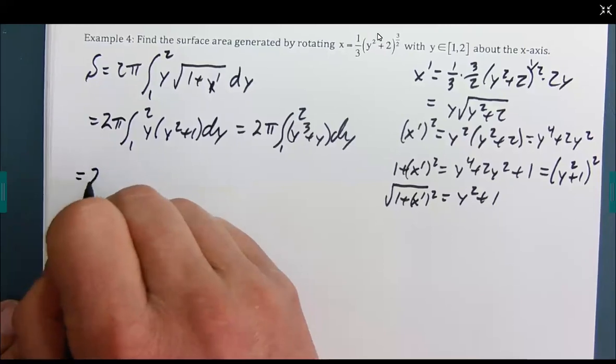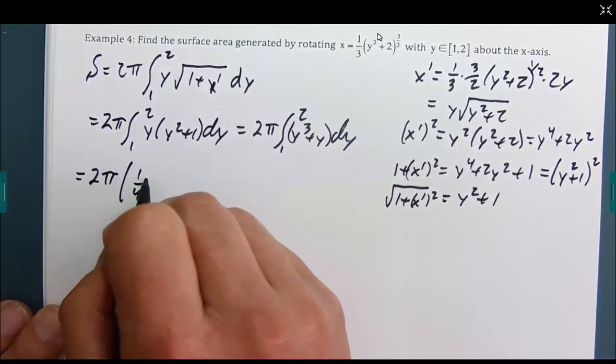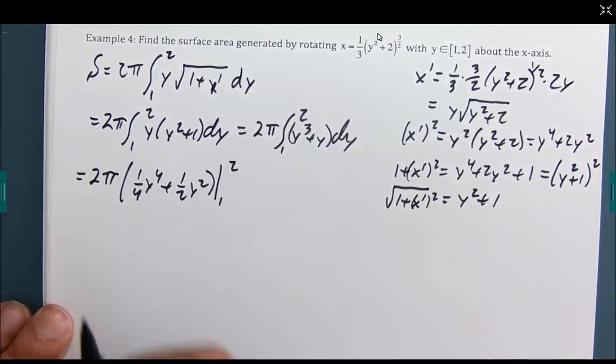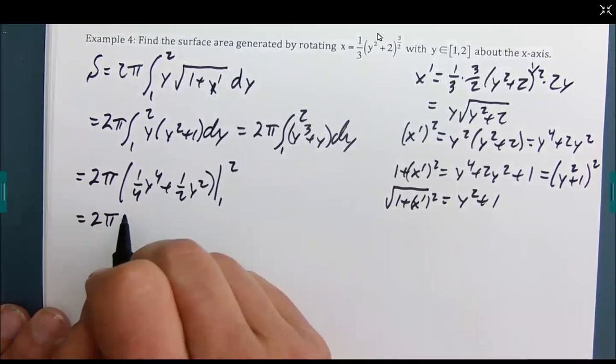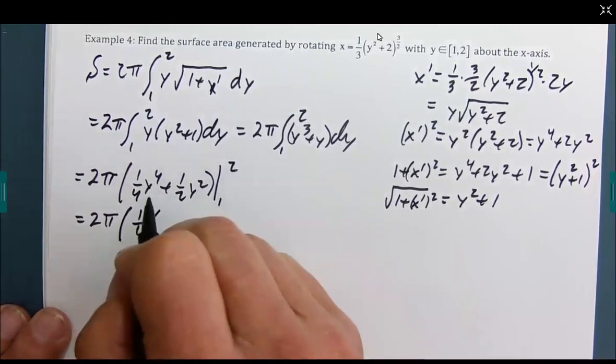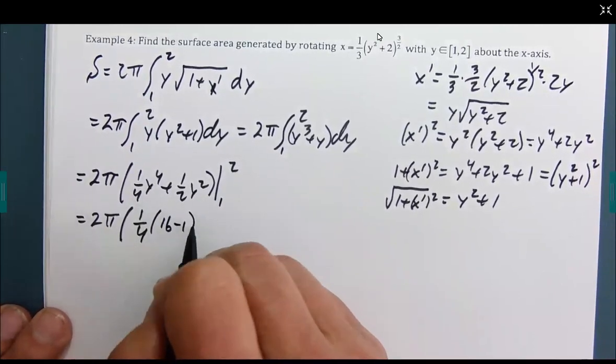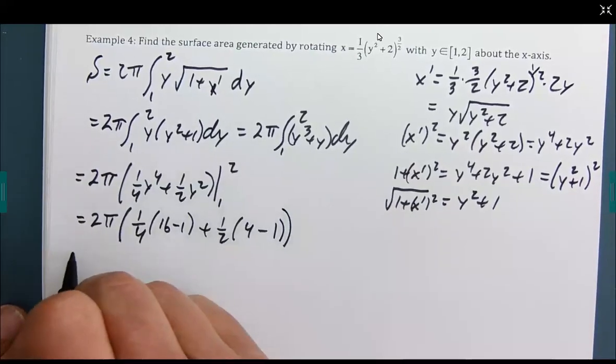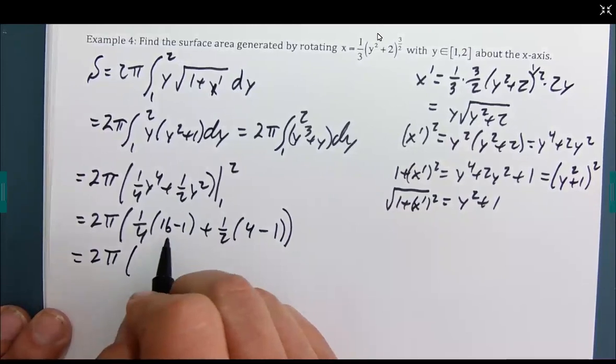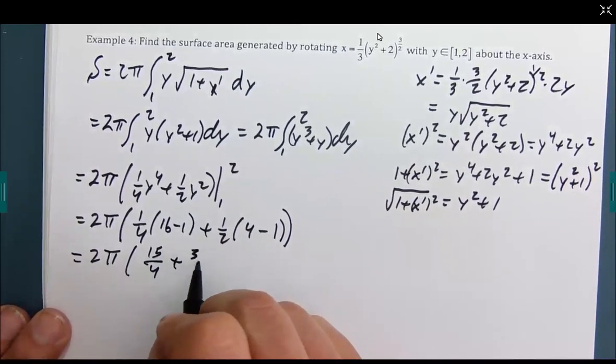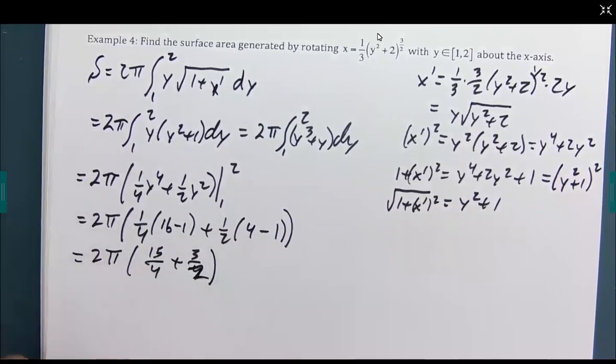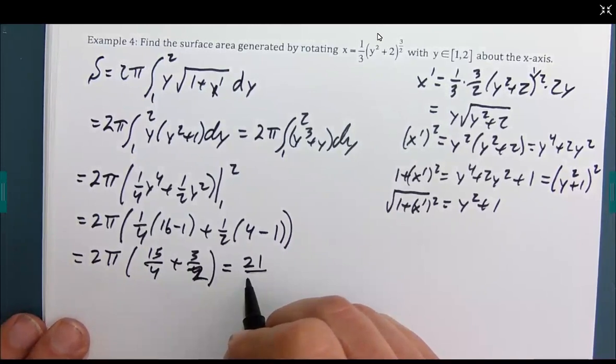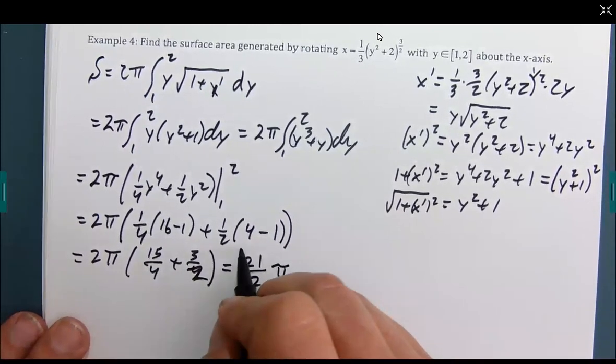Let's do this. This becomes y^4/4 plus y². 2 to the 4th power is 16. 1 to the 4th power is 1. 2 to the 2nd power is 4. That's 1. Let's see what we get. Looks like we're getting 15/4 plus 2/2. And putting all that together, including the 2π, we get there.